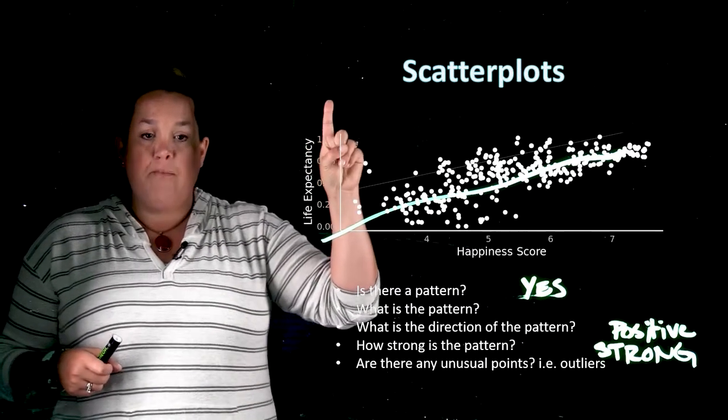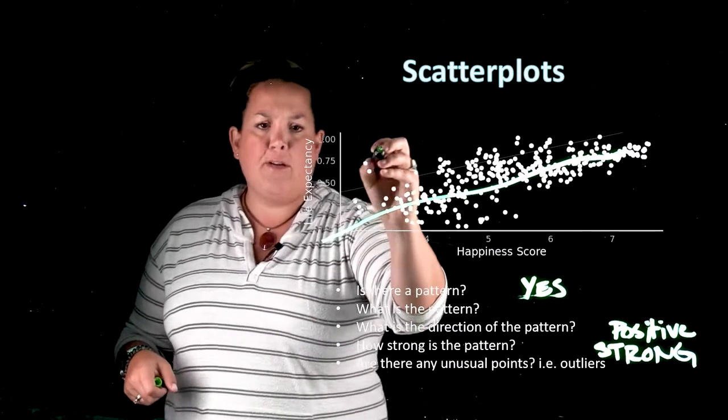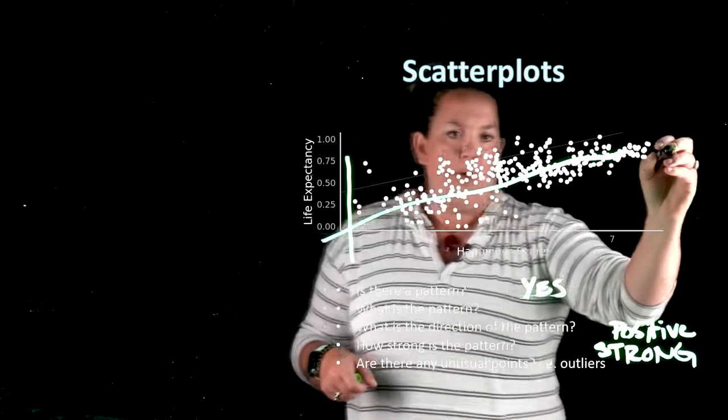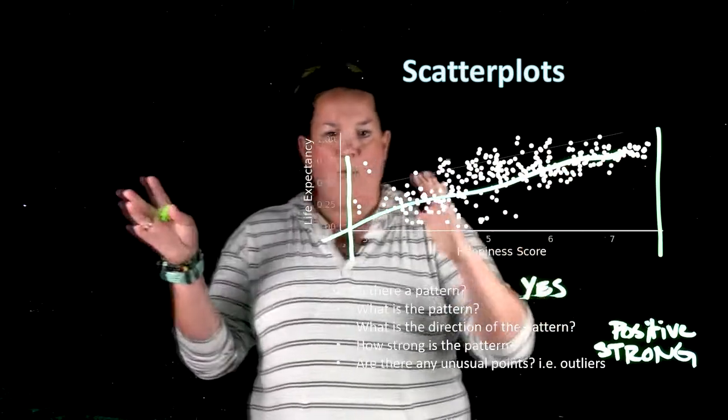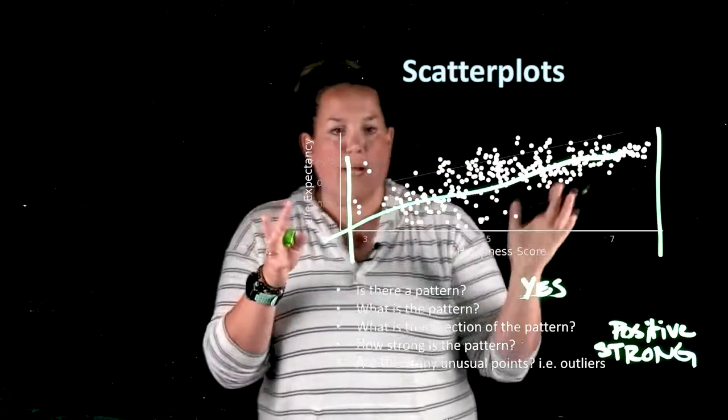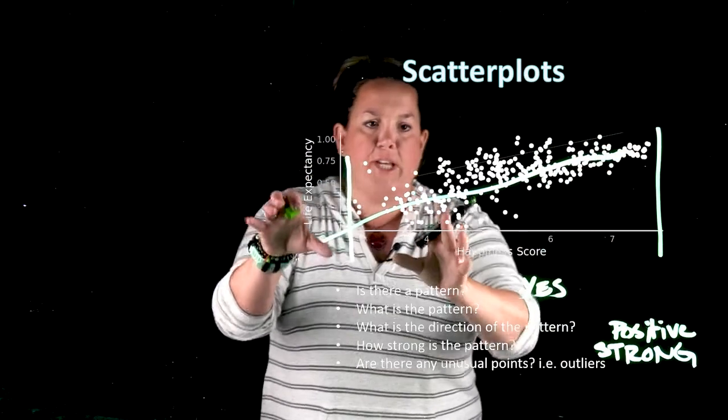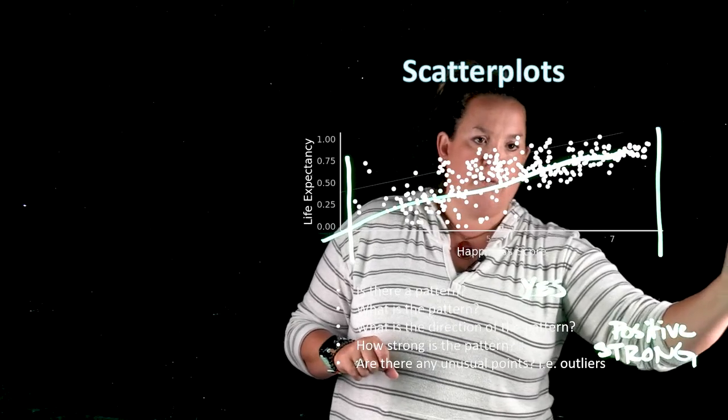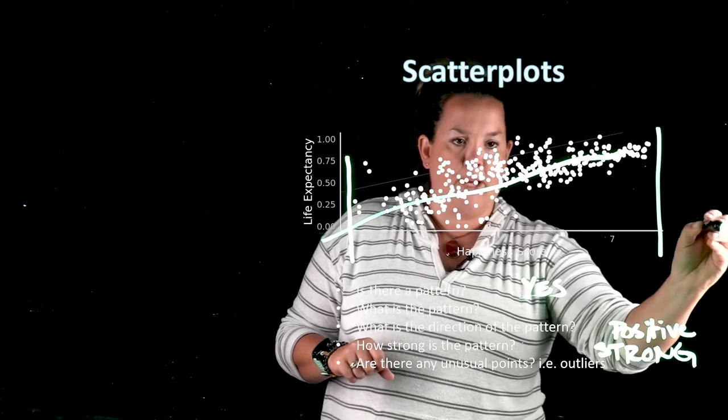The first way that something can be an outlier is if it's extreme in x. So essentially that means if we look at these x values start here and they end here, I don't have any values that really are extreme in that x. All of them are kind of in that x range that the rest of the data is. Something that's extreme in x might be way out here in a place that you can barely even see. That would be extreme in x.